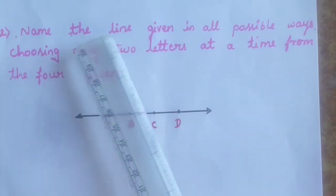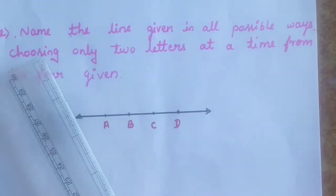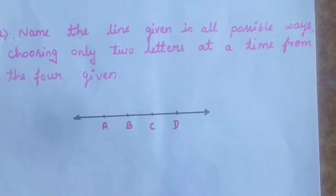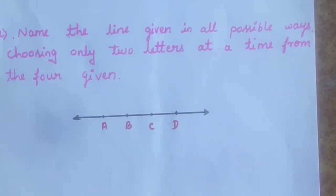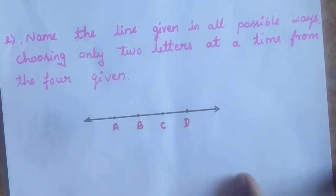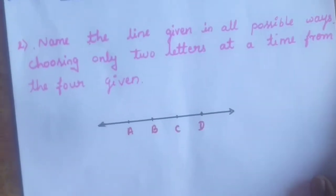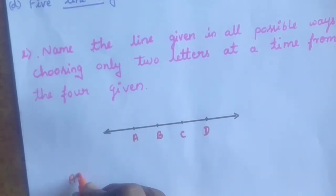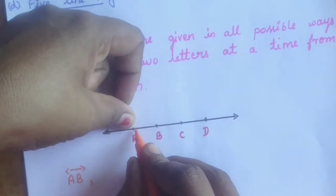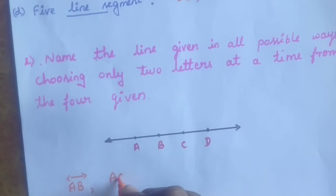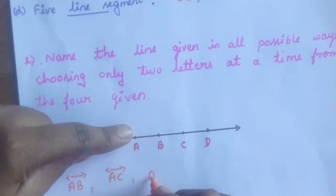Second question: name the line given in all possible ways, choosing only two letters at a time from the four given. So the given line has four points. We have to name all possible ways. Taking the first point A: AB is one line, AC is one line, and AD is also one line.